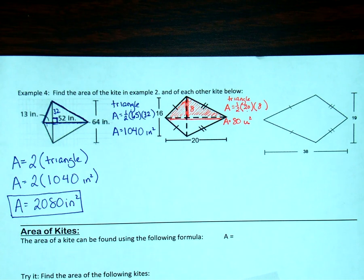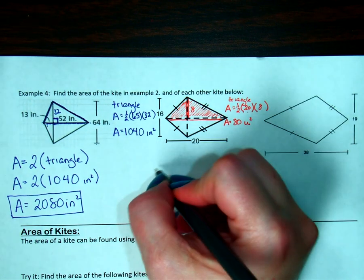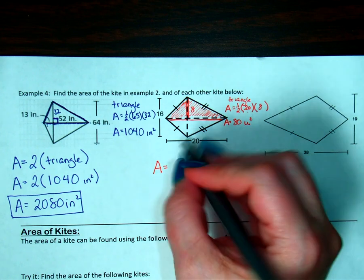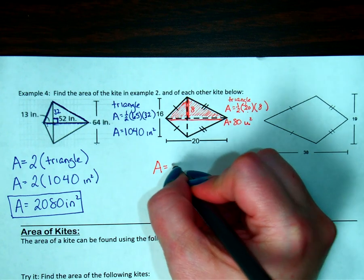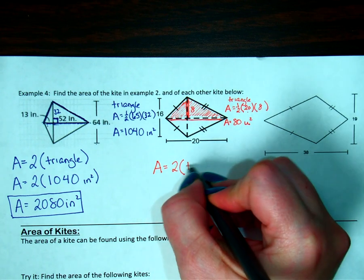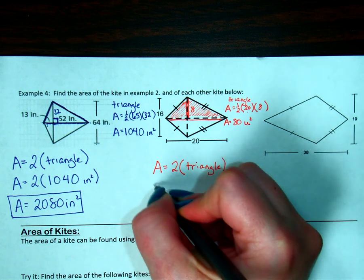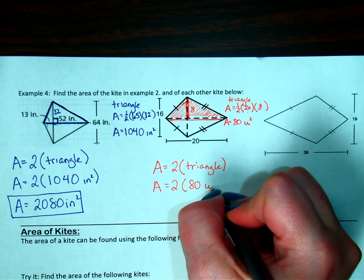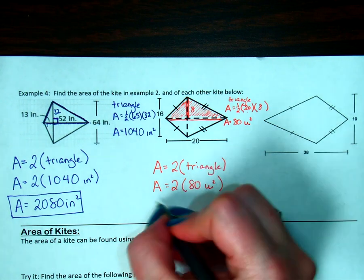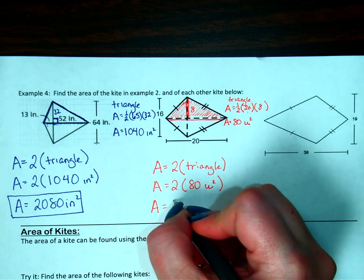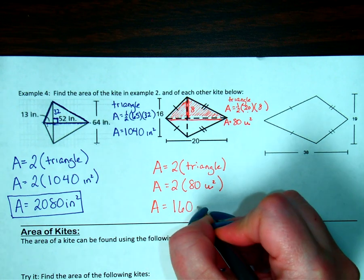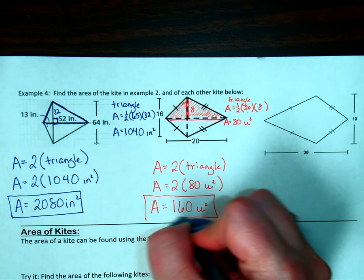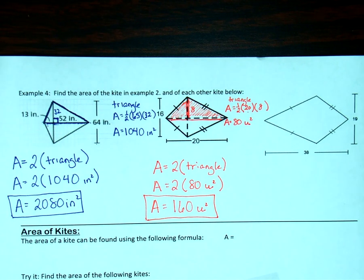Remember, don't ever put that square on the 80. It goes on the units. So then my total area, I have 80 for the top and 80 for the bottom, so it's going to be 2 times the triangle. So my area is going to be 2 times the 80 units. So my area is going to be 160 square units. Again, that square cannot go on the 160. It has to go on the units.